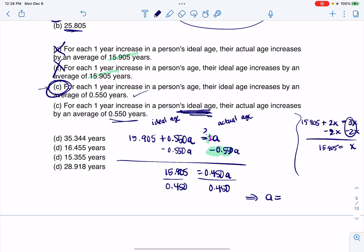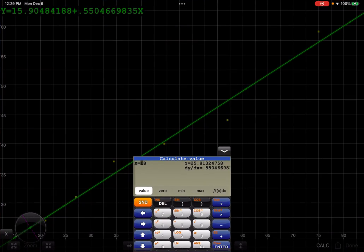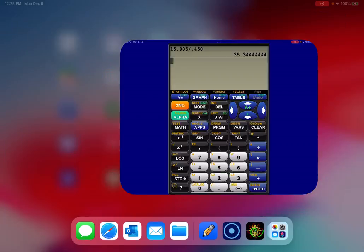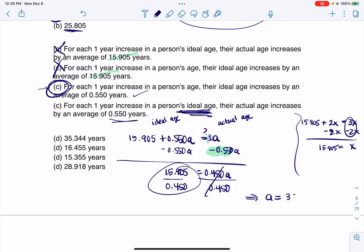So I have 15.905 divided by 0.450, and we wind up with about 35.344. So this would be 35.344 years. And what that means is when you get to be 35 years old, your ideal age is your actual age. That's where they cross each other. That's what that's saying. And then after that, you're going to be, if you're older than 35, your ideal age is a little bit lower. And if you're younger than 35, your ideal age is a little bit higher. All right, so I hope that helps with number four. Thanks so much, everyone. Bye.